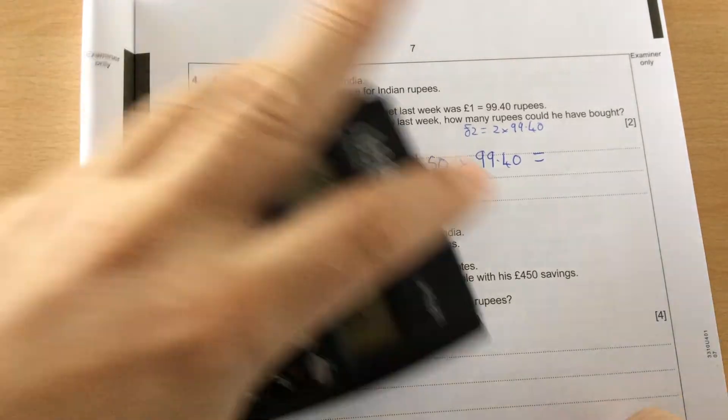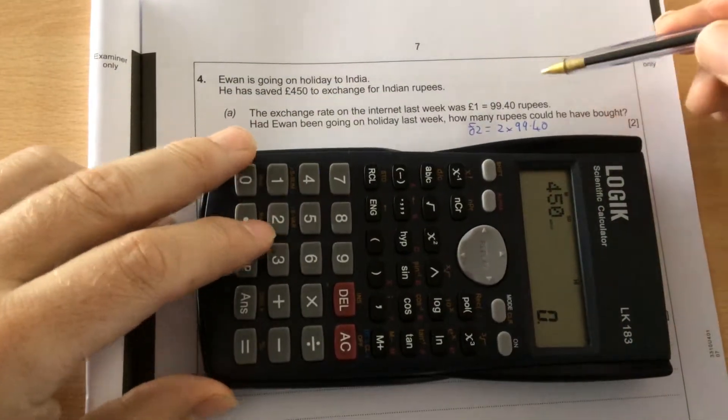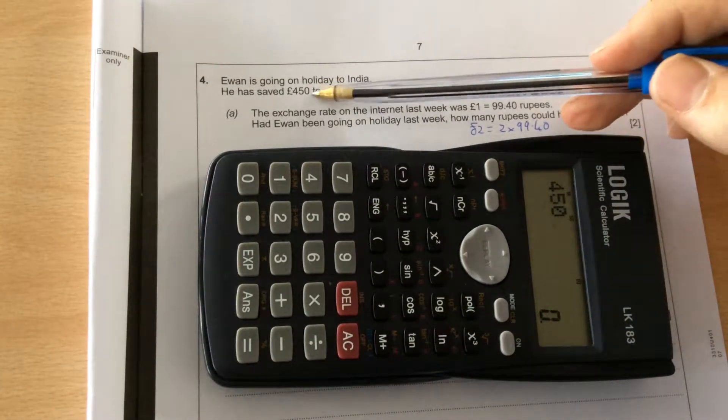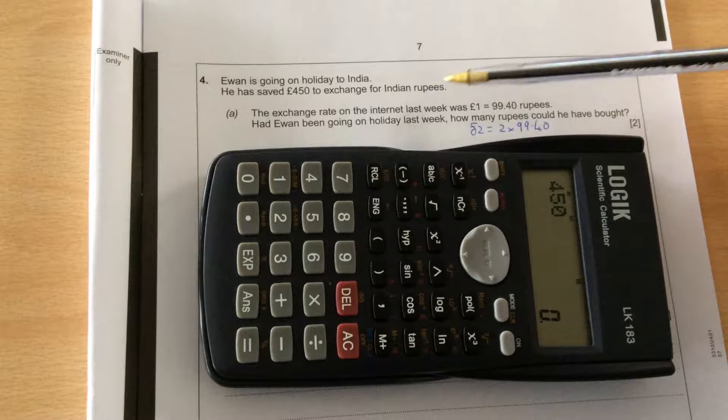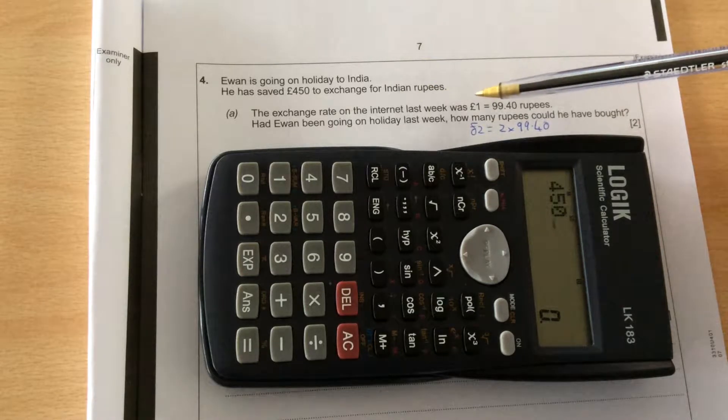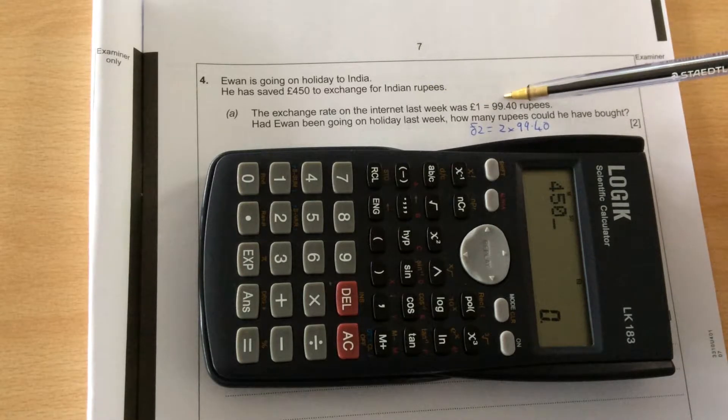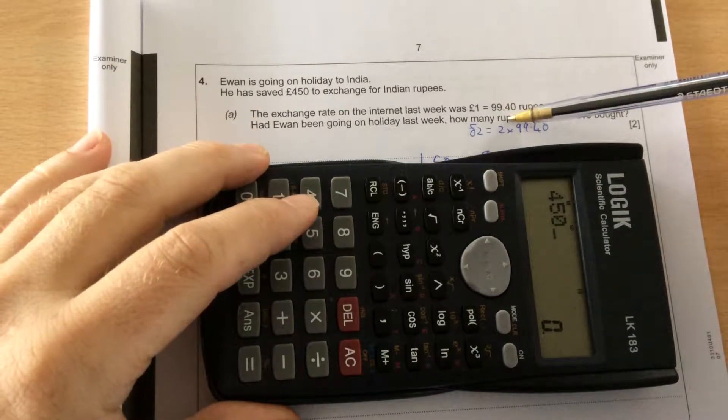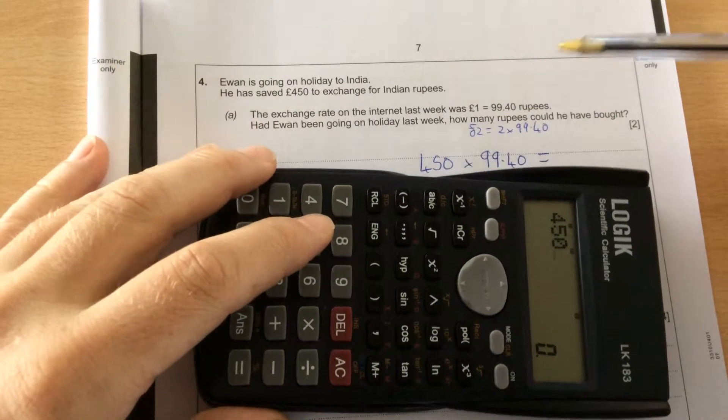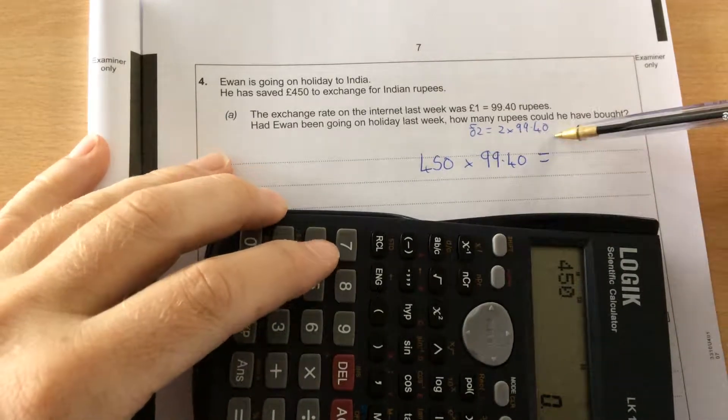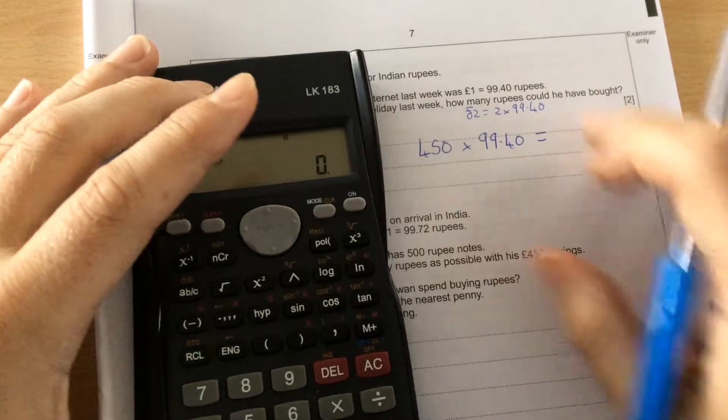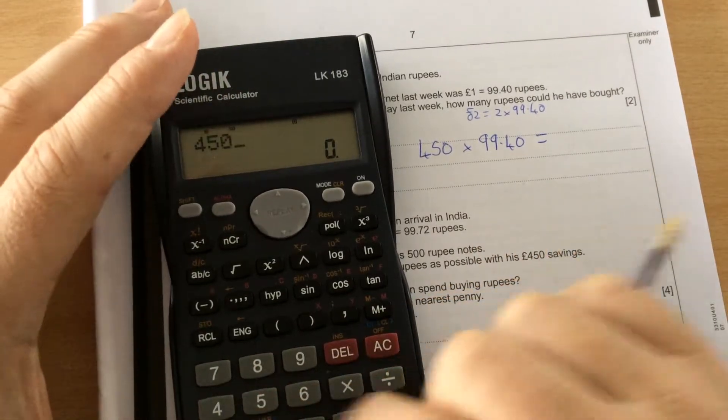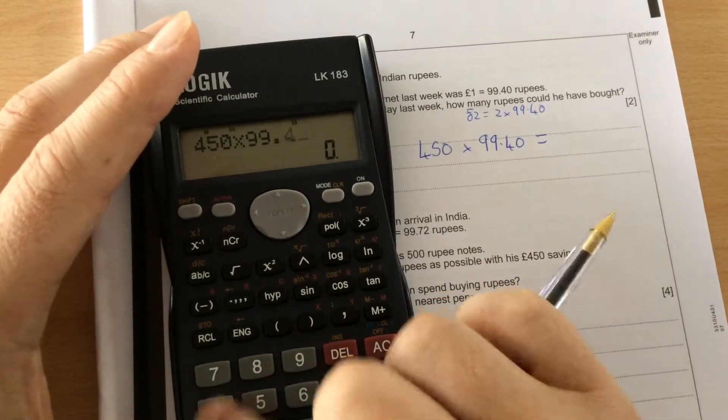Foreign exchange. When we're working out foreign exchange, we look at the exchange rate. So Ewan is going to change on holidays in India and he's changing £450 into Indian rupees. What they tell us is £1 equals 99.40 rupees. £2 would be 2 lots of 99.40, £3 would be 3 lots of 99.40. So the £450 would be £450 multiplied by 99.40.